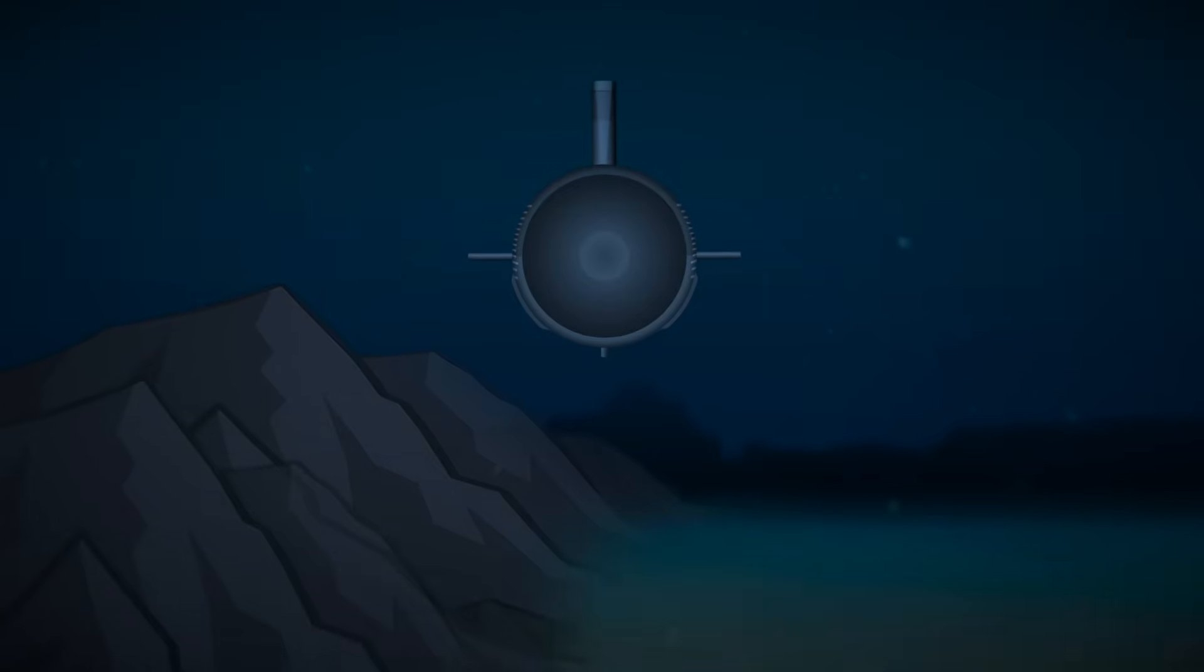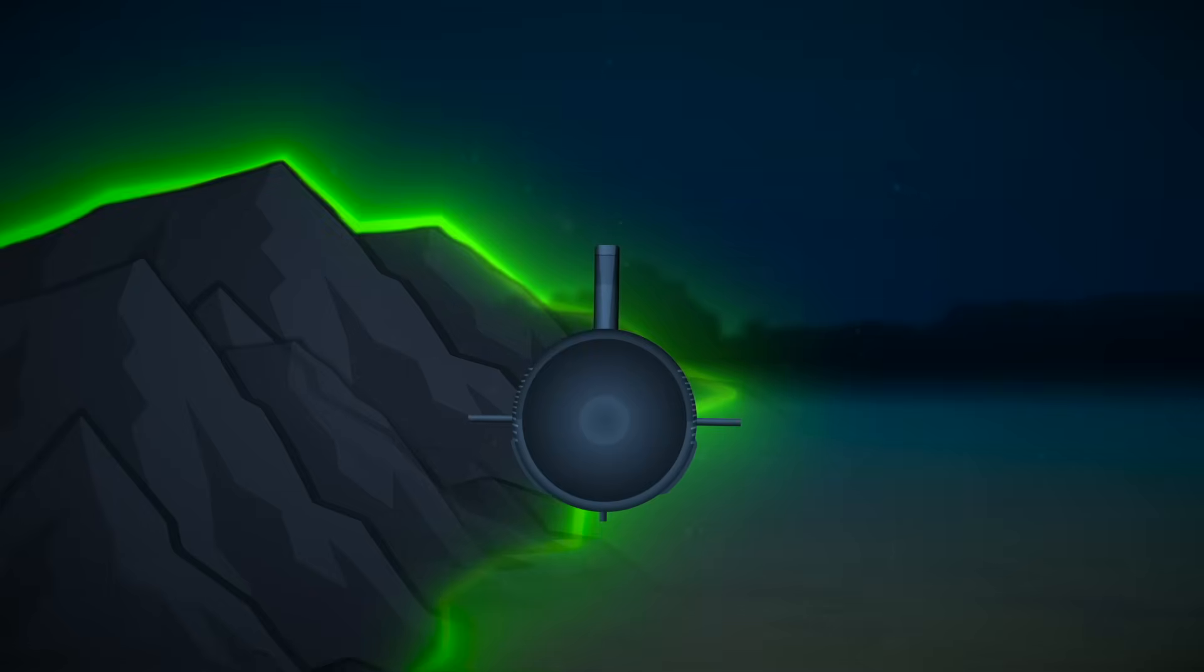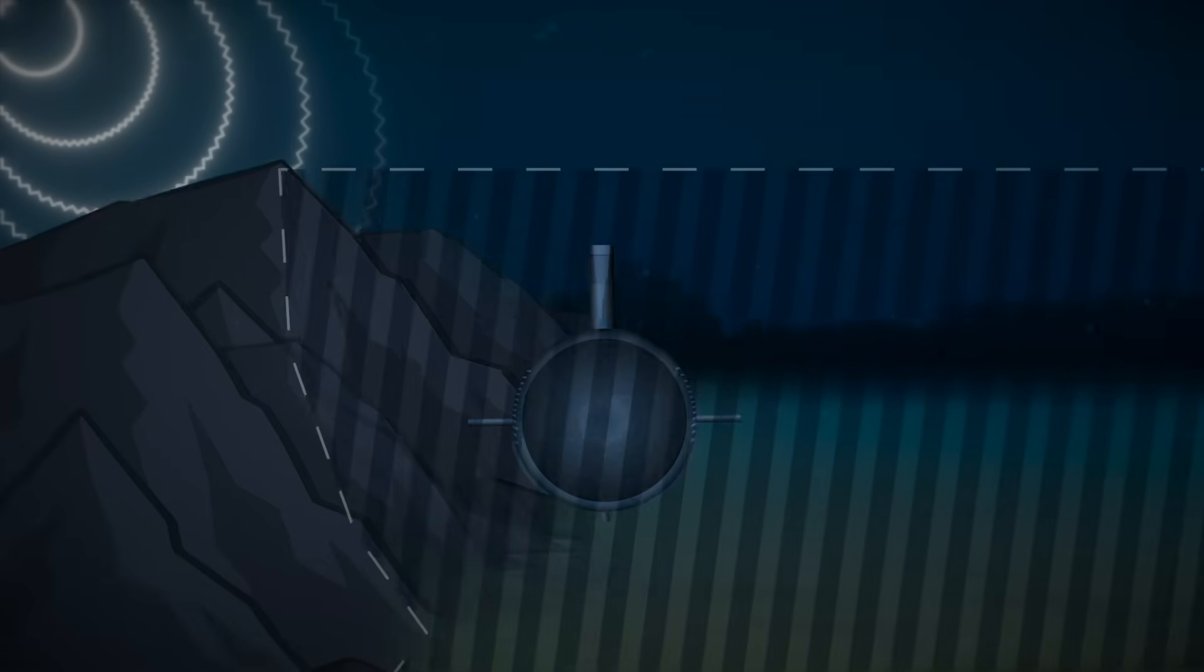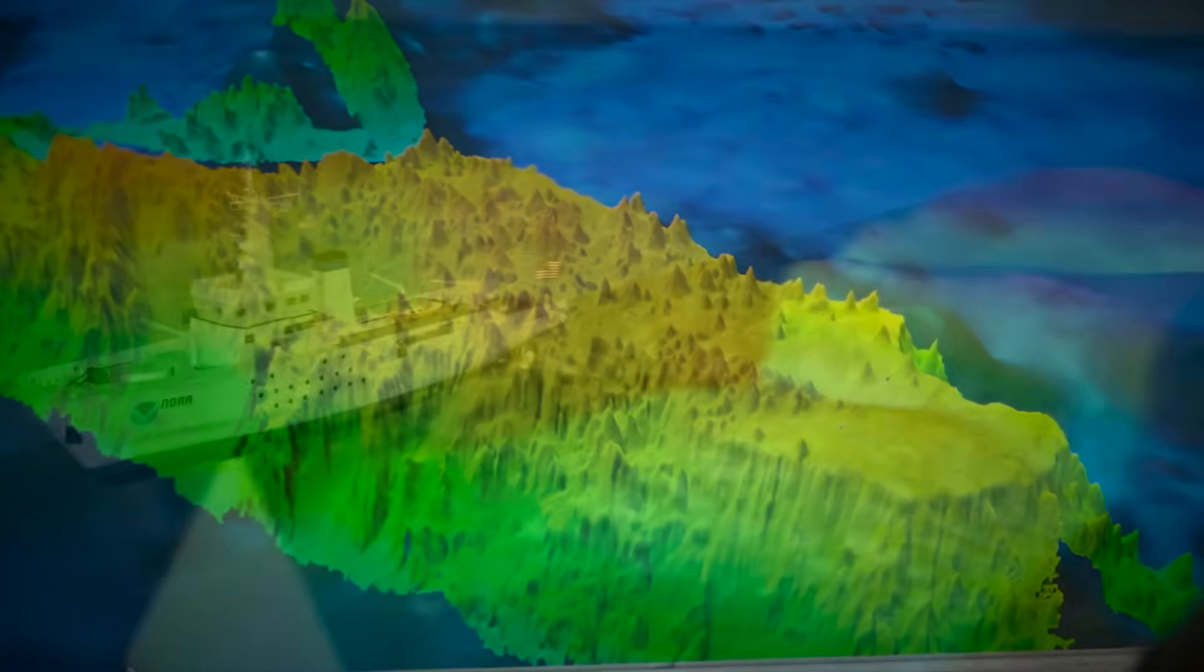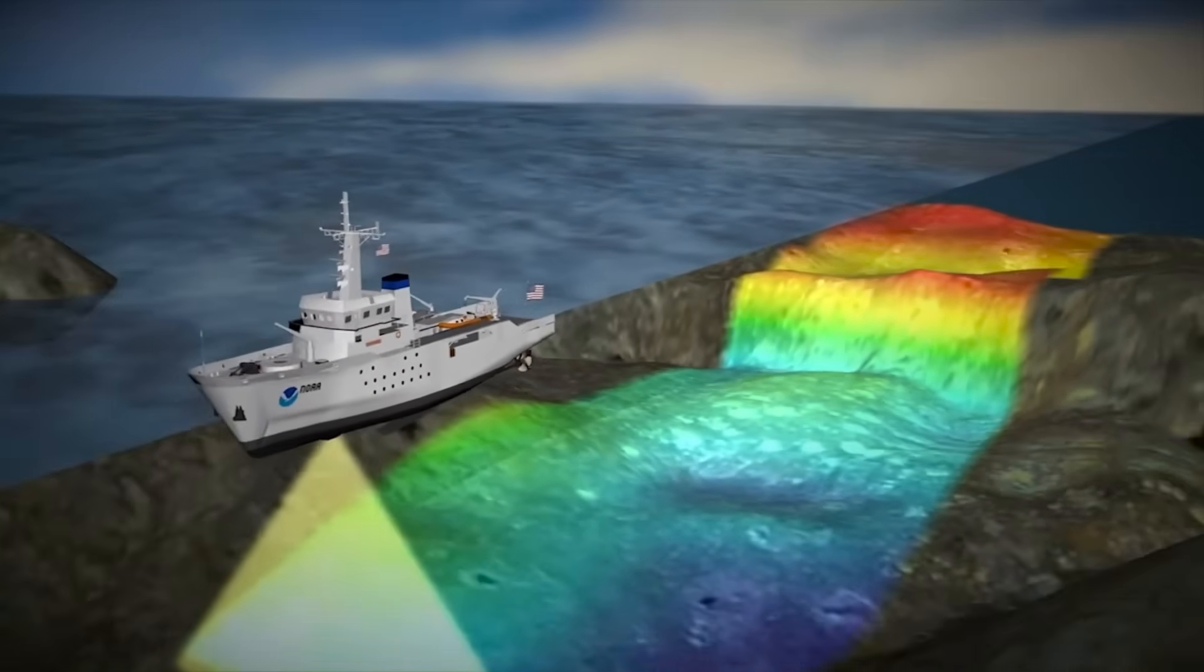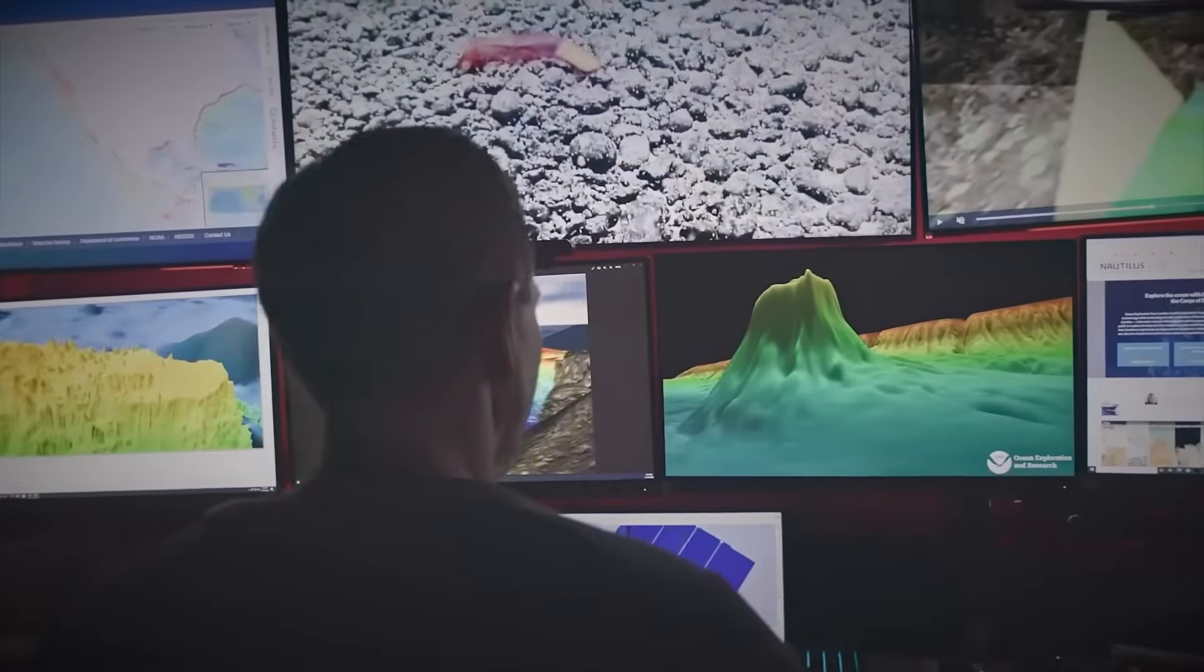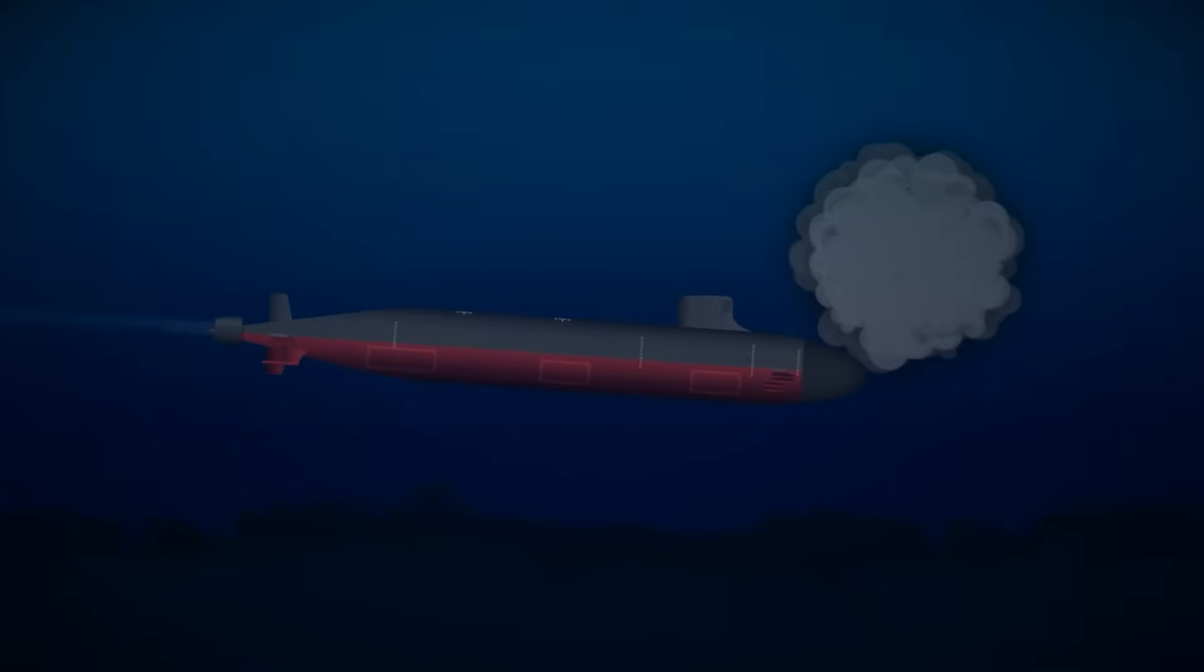Submarines also use terrain masking. In shallow or coastal waters, they hug the seabed or navigate along underwater ridges. These features block sonar paths and create localized shadow zones that further hide their presence. In reality, the ocean isn't just a flat space. It's a constantly shifting matrix of sound highways, tunnels, mirrors, and dead zones. Submariners, along with oceanographers and acoustic engineers, have learned to read it like a map.